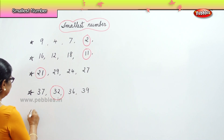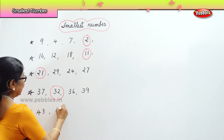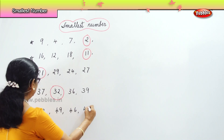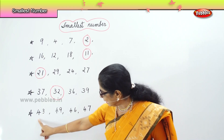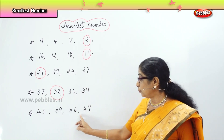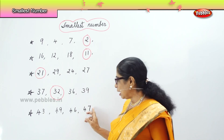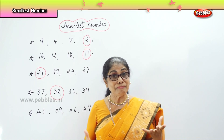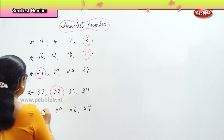Another lot of numbers: 43, 49, 46, and 47. We have 4 numbers, all in 40s. First numbers are 4, 4, 4, 4. Let's look at the second number: 3, 9, 6, 7. Among 3, 9, 6, 7, which is the smallest? 3. So, 43 is the smallest among 49, 46, 47. We circle 43.